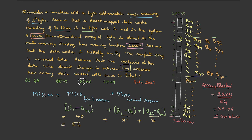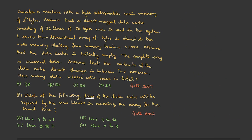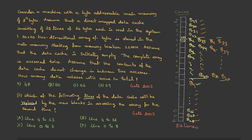Therefore, the answer to the first part is 56 misses, which is option C. There is also a continuation question: which cache lines will be replaced by new blocks when accessing the array for the second time? From the diagram, the data replacement is only happening between cache lines 4 to 11. That is option A.